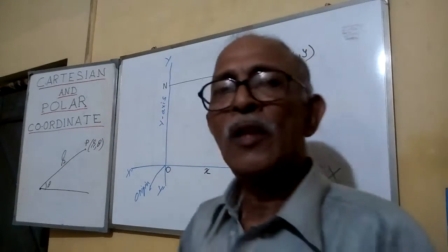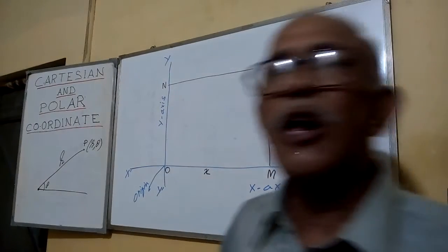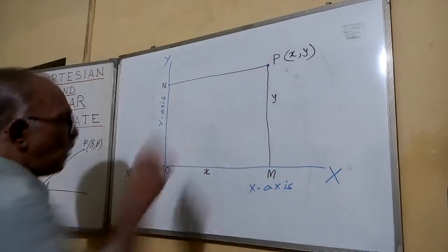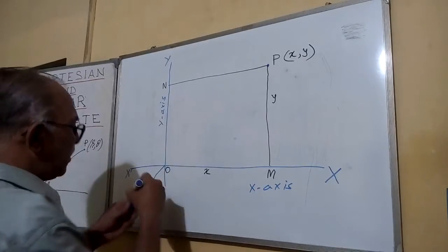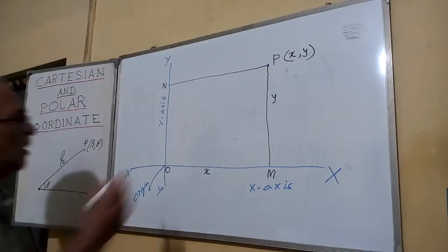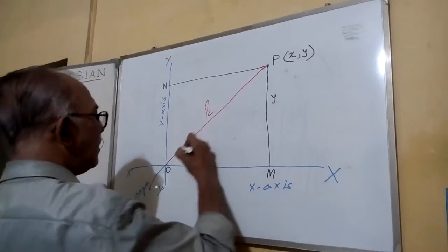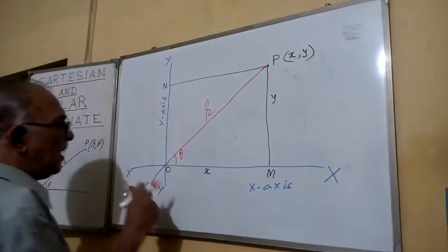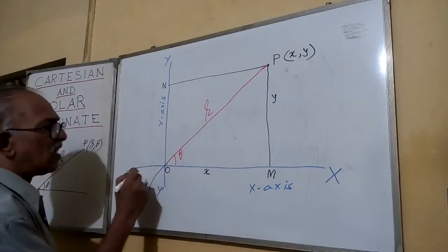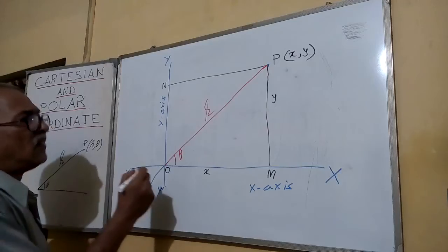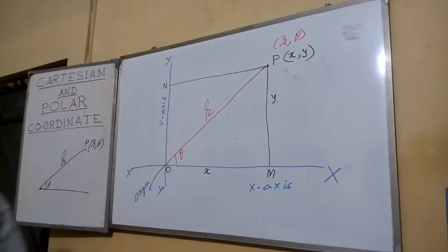Now we will try to establish a relation between the Cartesian coordinate system and the polar coordinate system. Let us consider the same point P. If we describe this point P in polar coordinates, this distance is R and this angle is theta. Here the origin is considered as the pole and the x-axis is considered as the initial line. Then the coordinate of this point becomes R, theta. Now, what is the relationship between these two systems?